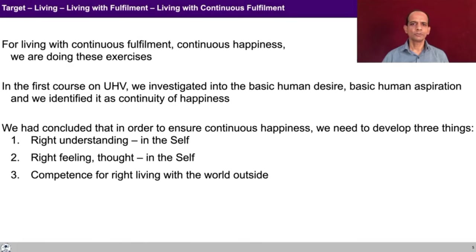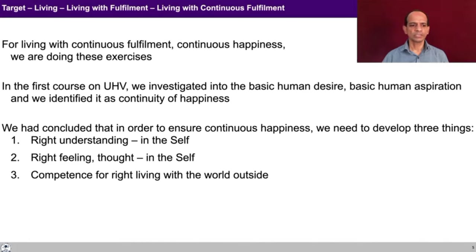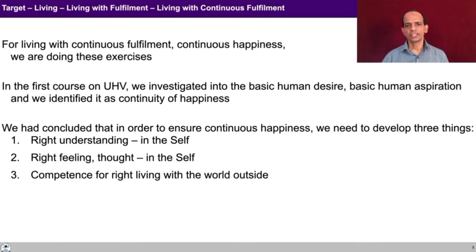When we are only trying to fulfill relationship, we are working to be happy. When we are only working for physical facility, we are just trying to survive. In the first course on UHV, we investigated into the basic human desire — the basic human aspiration — and identified that it is continuity of happiness. We concluded that to ensure continuous happiness, we need to develop three things: right understanding in the self, right feeling and thought in the self, and competence or right living with the world outside.